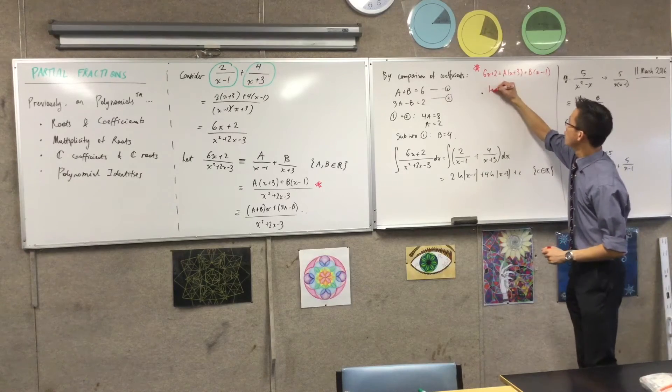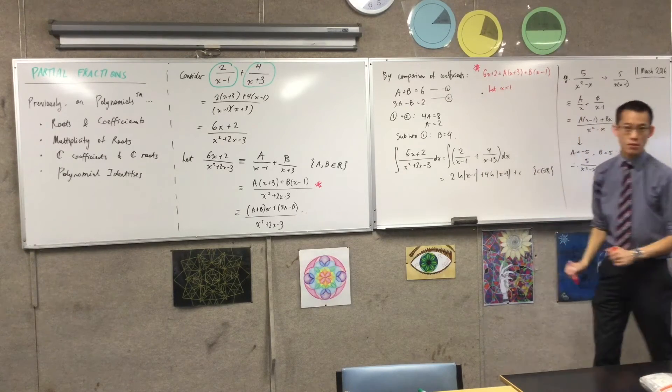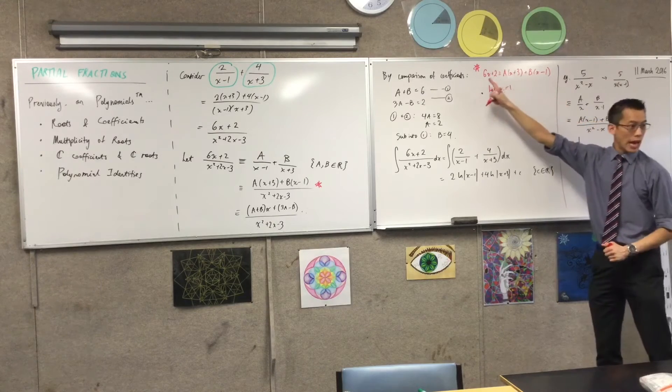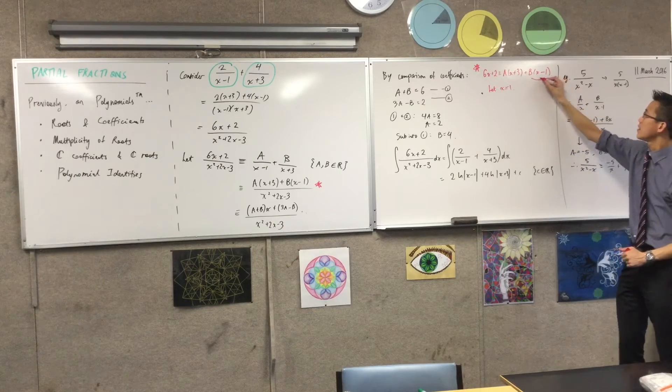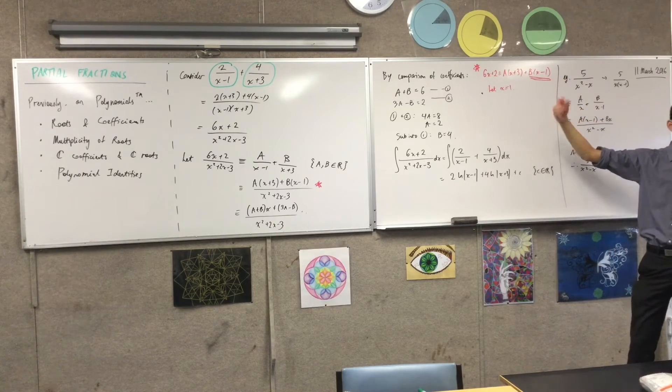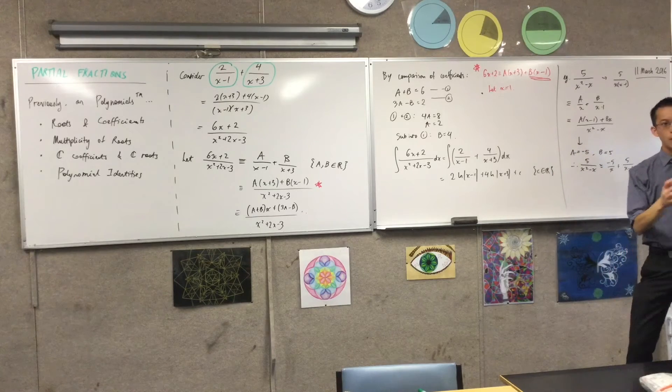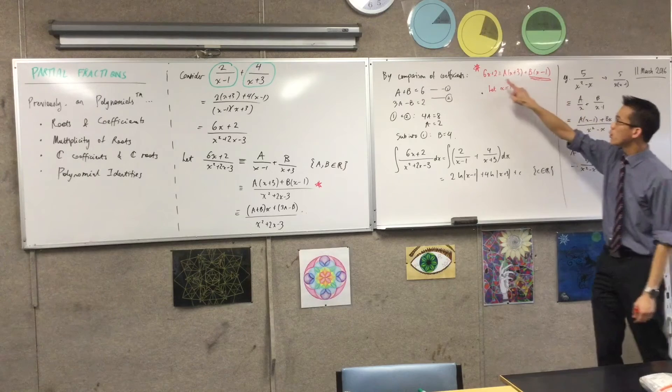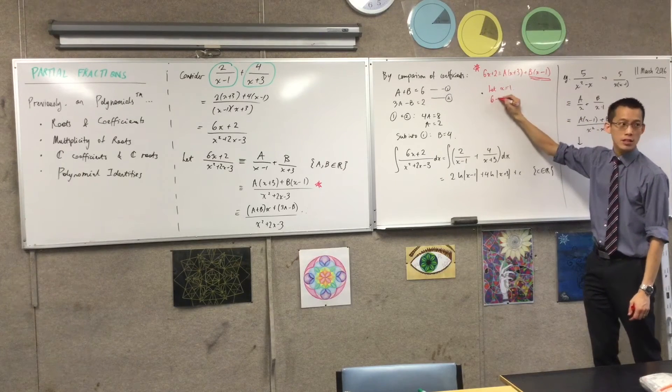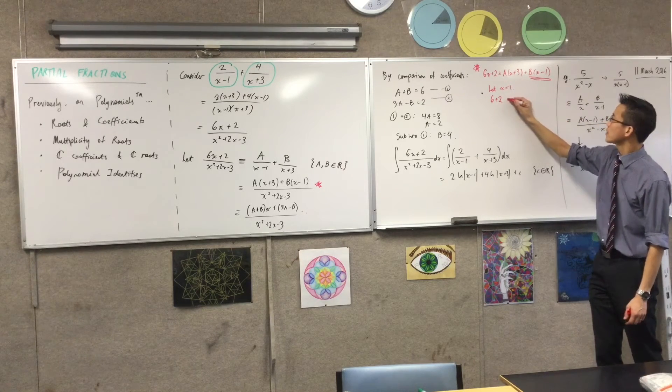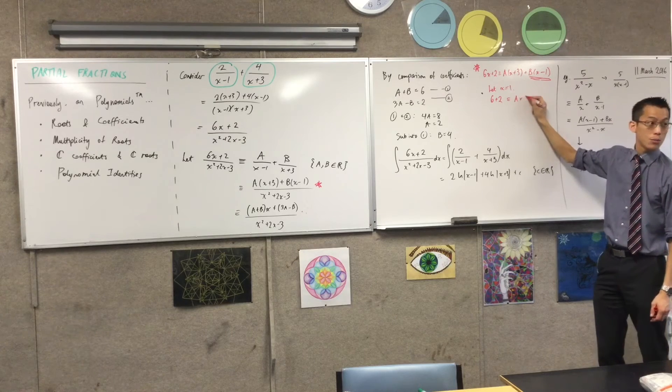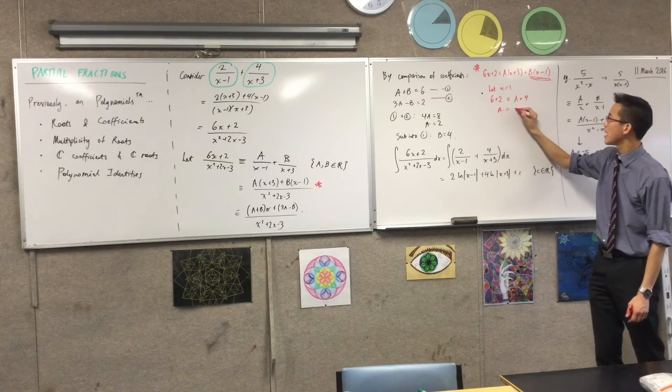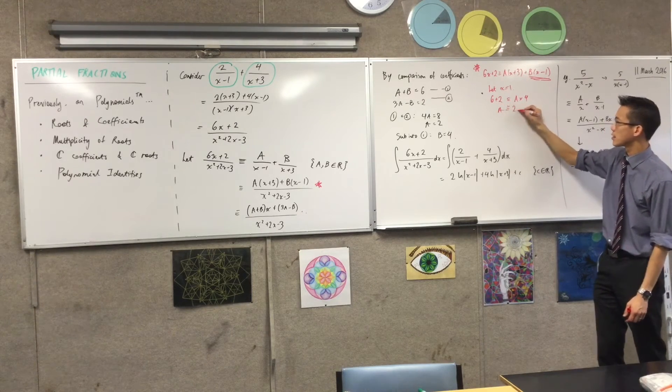For example, you could let x equal 1, right? Now, if I let x equal 1, see what happens to this thing. This guy just vanishes, right, because he becomes 0. This is something like what we were doing with factor theorem and remainder theorem before. If this vanishes, all you get left with over here is 6 plus 2, which is equal to A times 4. And you get the same, that's A, so you get the same result, right?